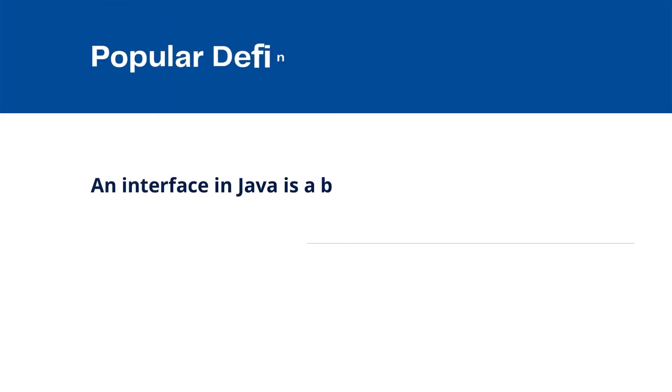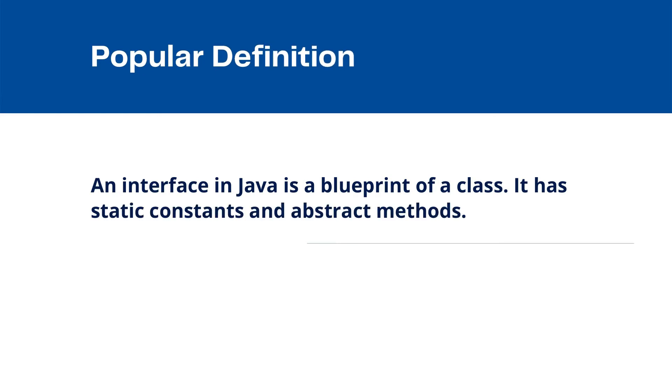Here is the popular definition of interface. If you google it out, the interface definition would be like: an interface in Java is a blueprint of a class. It has static constants and abstract methods. This is quite popular but I won't recommend you to memorize this definition because when first time I was reading this, I was not sure what it is talking about. So it's just a definition. While we will be going through the slides you will get to know, you will understand why this interface came into this world. If you know the reason of why, trust me you can easily define anything. So always try to find out the reason of why to make your own definition.